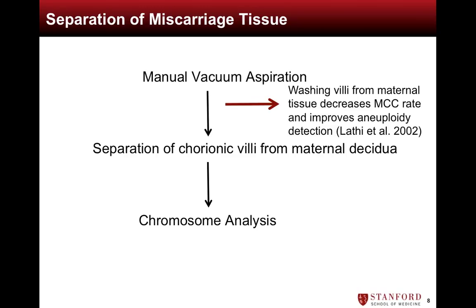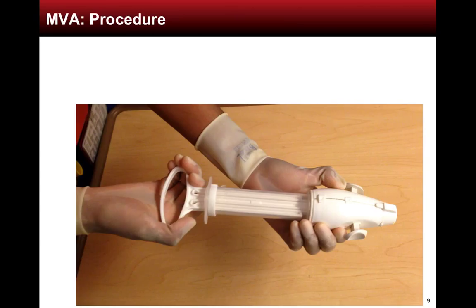The technique of separating villi from decidua was originally described by our group in a study in 2002, when we found that the incidence of 46-XX results was significantly reduced by washing villi and the detection of aneuploidy was significantly increased, demonstrating that simple changes in technique can lead to large improvements in the success of chromosome analysis. The MVA is a commonly performed procedure, so we will focus on and discuss in greater detail the aspects of the procedure that are performed differently for subsequent chromosome analysis of the miscarriage tissue.